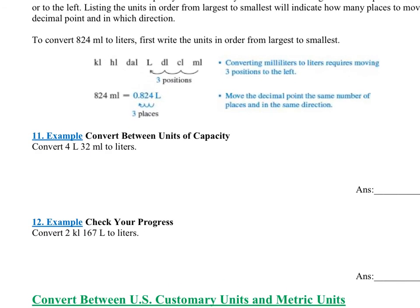It says example 11, convert 4 liters 32 milliliters to liters. Well, we already have 4 liters. We don't need to mess with that. So it's going to be 4 liters plus whatever we get in terms of liters for 32 milliliters. So we need to convert 32 milliliters to liters.